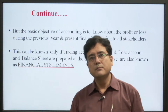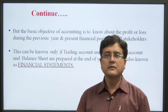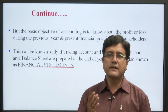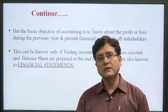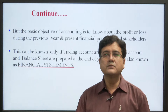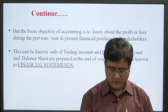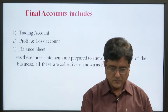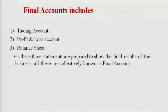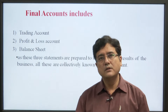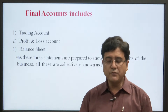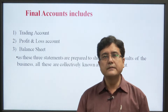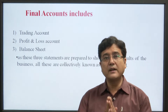Financial statements include the profit and loss account, trial balance, manufacturing account, balance sheet, and cash flow statement. These are the statements we know as financial statements. More specifically, they include the trading account, profit and loss account, and balance sheet. As these three statements are prepared to show the final result of the business, they are currently known as final accounts.